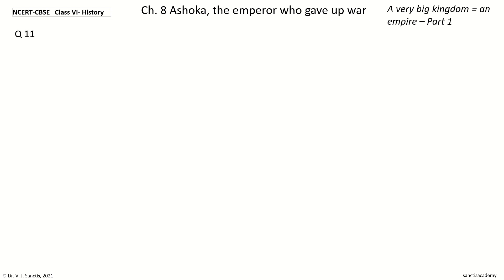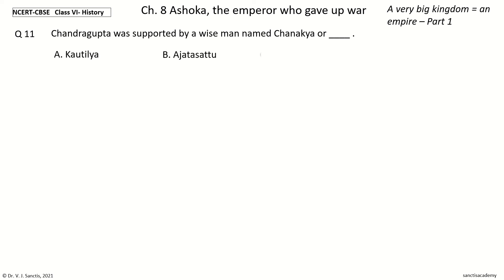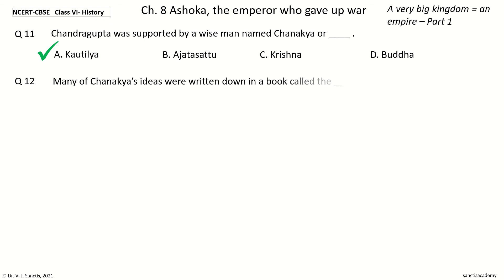Question 11: Chandragupta was supported by a wise man named Chanakya or — blank. The options are: Kautilya, Ajatasattu, Krishna, Buddha. The answer is Kautilya. So Chandragupta was supported by a wise man named Chanakya or Kautilya.